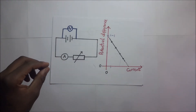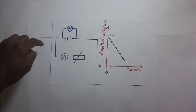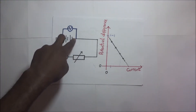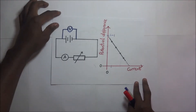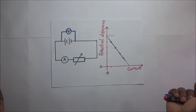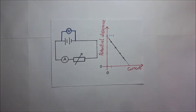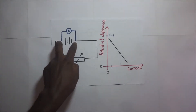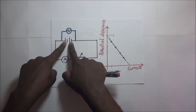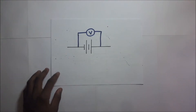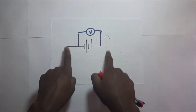The potential difference across the terminals of the cell is maximum when no current is being drawn out, and this is what we refer to as the EMF of the cell. So the EMF is the potential difference across the terminals of a cell when no current is being drawn out. You can also say it is the voltage across the cell on an open circuit — when no current is being drawn out, the cell is on an open circuit.